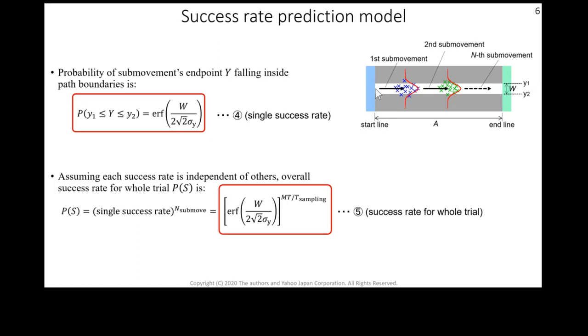So we obtain equation 4 as the success rate of a single sub-movement. Then we can compute the number of sub-movements in a trial. And finally, the success rate of the whole trial is equation 5.